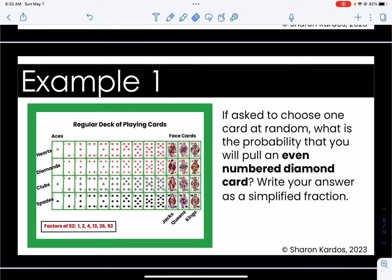Example number one says if asked to choose one card at random what is the probability that you will pull an even numbered diamond card? Write your answer as a simplified fraction. An even numbered diamond card. So you can pause the video, see if you can come up with an answer and then turn it back on.